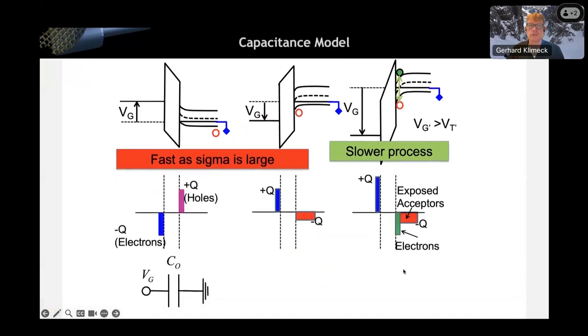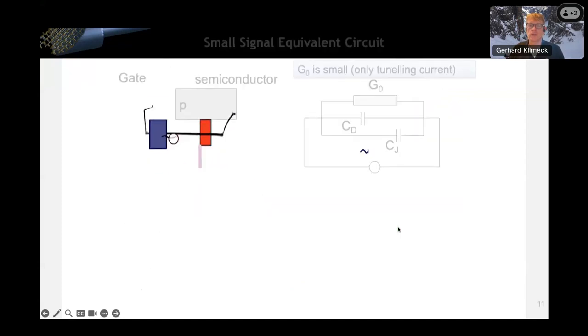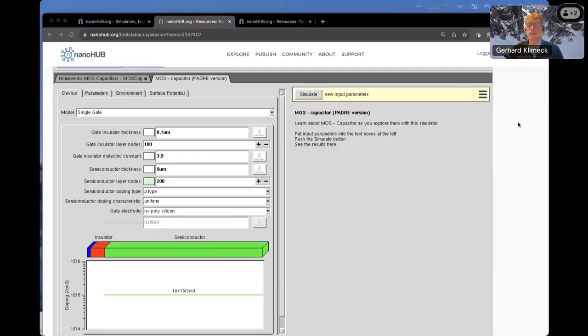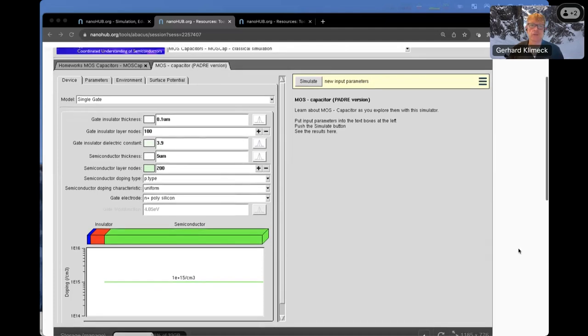That's the operation principle of MOS capacitor. You can do some calculations on recombination rates. The response times here in the accumulation and depletion is very fast because everything happens with the majority carriers. And if you're dependent on electrons here in the inversion layer, it's a slower process. In this case, you have a capacitor with just two plates. Here, what you have is really two serial capacitors. That's really how an MOS capacitor works. Let's play with it.